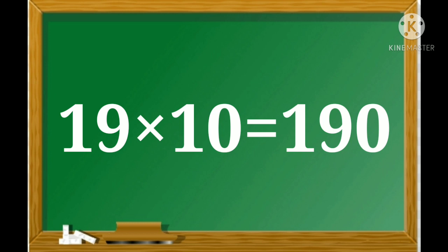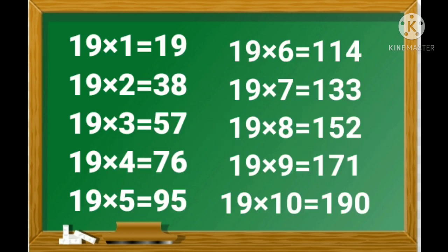Again, we learn multiplication table of 19. 19 ones are 19, 19 twos are 38, 19 threes are 57, 19 fours are 76, 19 fives are 95, 19 sixes are 114, 19 sevens are 133, 19 eights are 152, 19 nines are 171, 19 tens are 190.